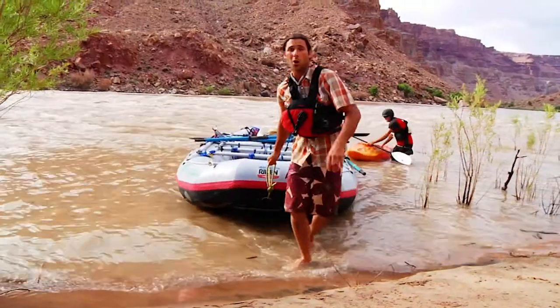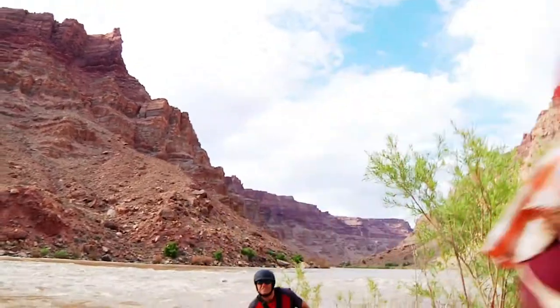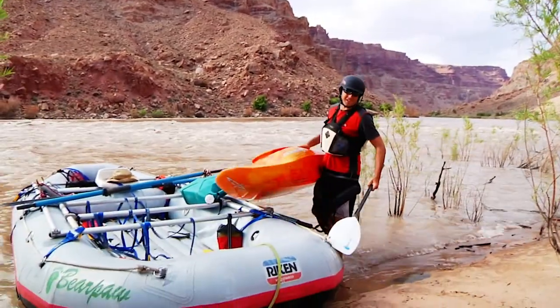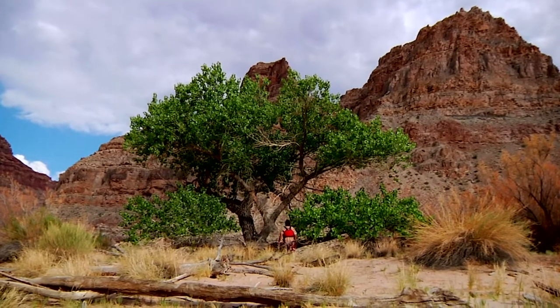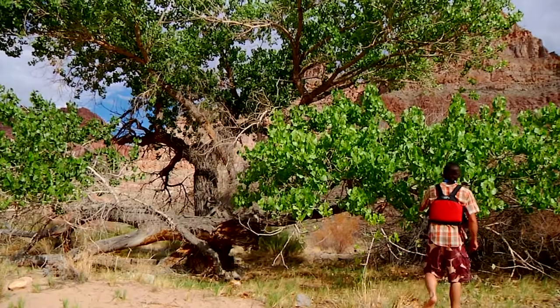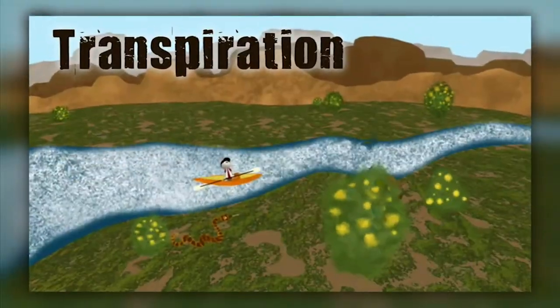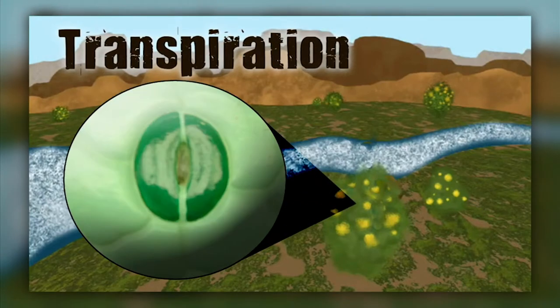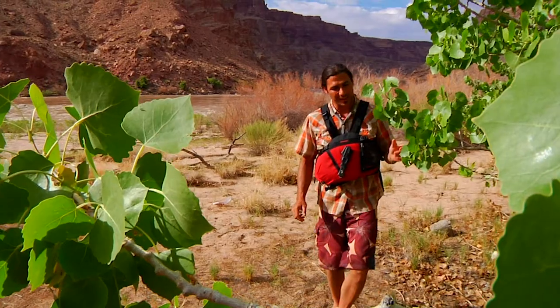About 90% of atmospheric moisture comes from evaporation. So what about the other 10%? It comes from plants, like that big tree over there. Plants are responsible for about 10% of the water in the atmosphere through a process called transpiration — when plants release water and oxygen as waste products through pores in their leaves and stems called stomata. On a hot dry day, a full grown tree can lose over 400 liters of water a day.